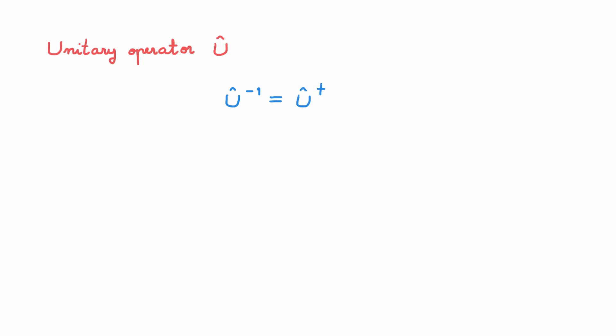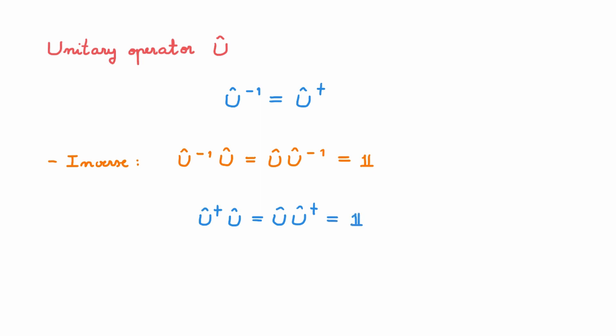A unitary operator U is an operator whose inverse is equal to its adjoint, and the definition is as simple as that. In the rest of the video we'll explore the properties of operators that obey this relation. But before we do that, let's rewrite the definition in another way that is also typically used. Remember that the inverse of an operator is such that when we multiply them together in either order we obtain the identity. For unitary operators this means that U†U = UU† = I. This equation is a restatement of the fact that U† is equal to the inverse of U.